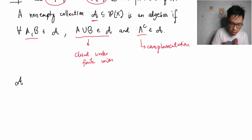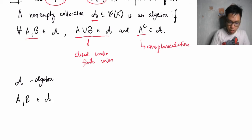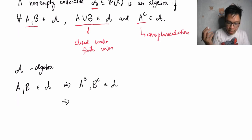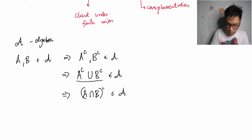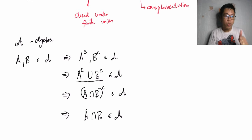Suppose we have an algebra and two sets A and B that are elements from this algebra. By definition, the complements of these two sets are in the algebra, which implies that their union is also an element of the algebra. Observe that by De Morgan's law, this union of complements is equivalent to the complement of the intersection. So taking the complement again, the intersection of two sets is also closed under the algebra. That's remark number one.